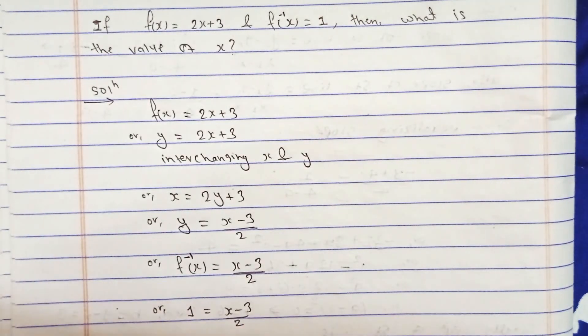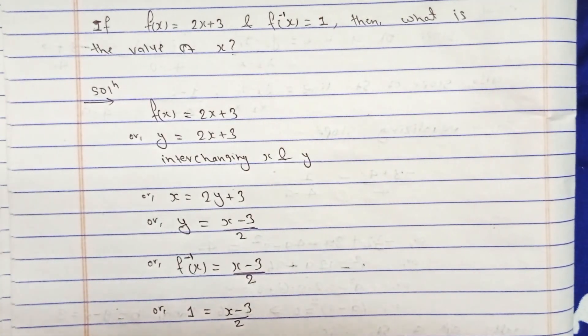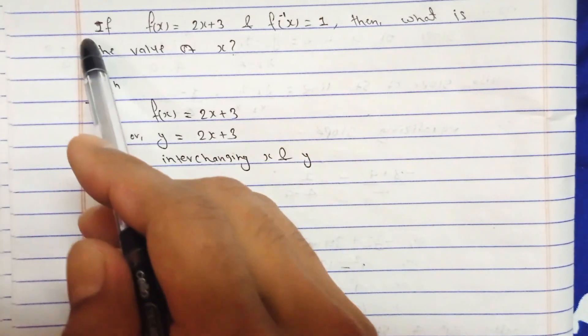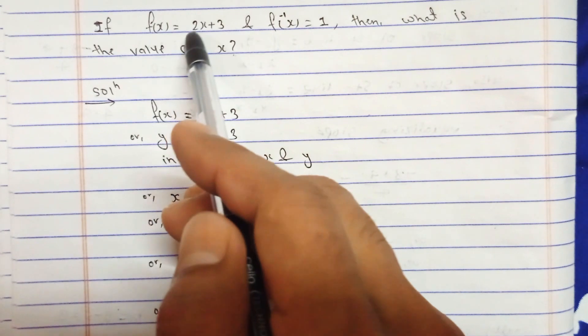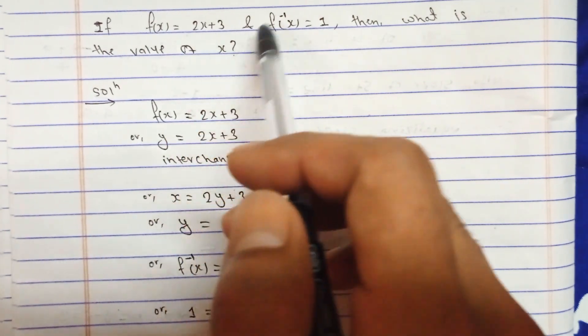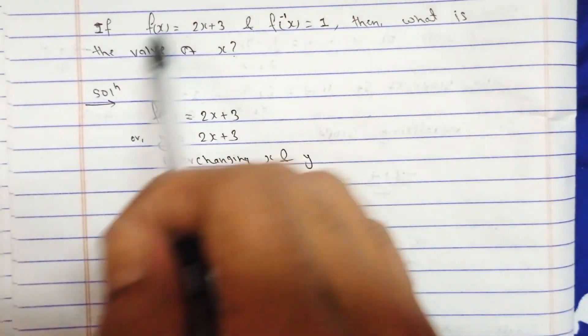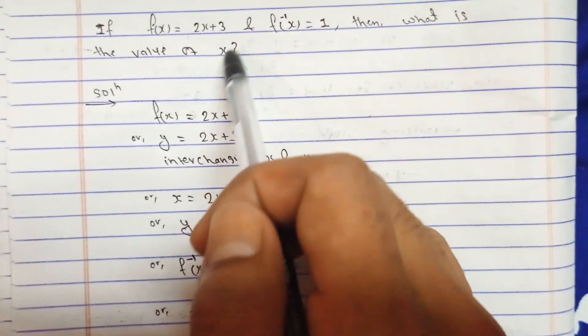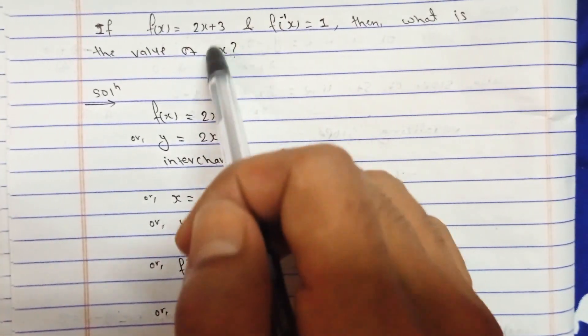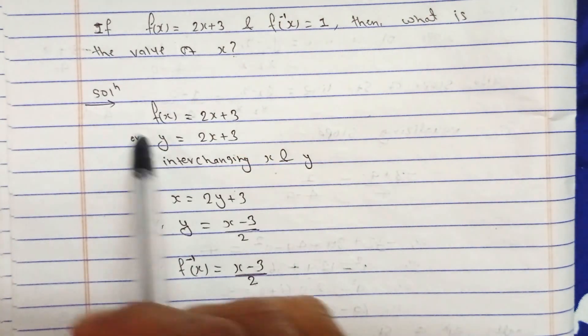Hello students. Today I got a question from functions: if f(x) equals 2x plus 3 and f inverse x equals 1, then what is the value of x? We have to find the value of x.